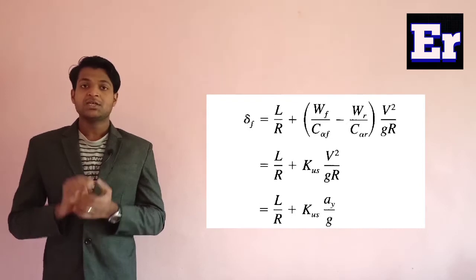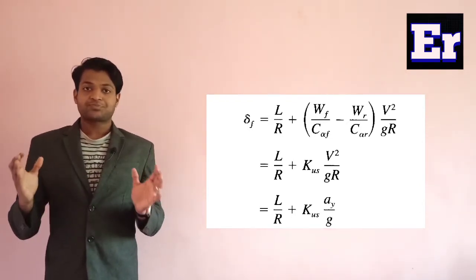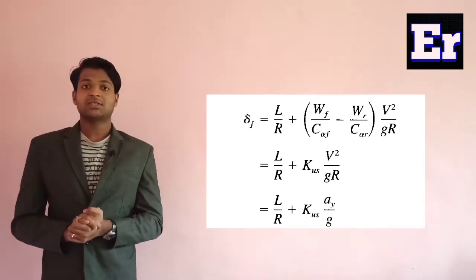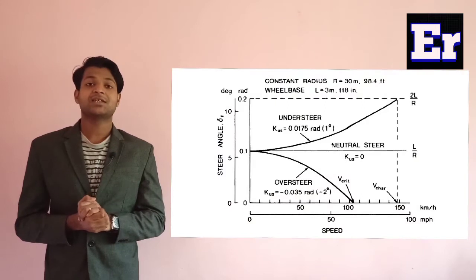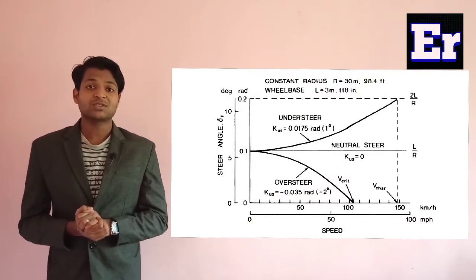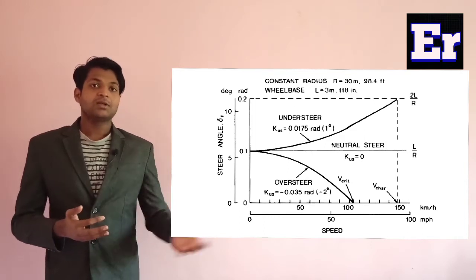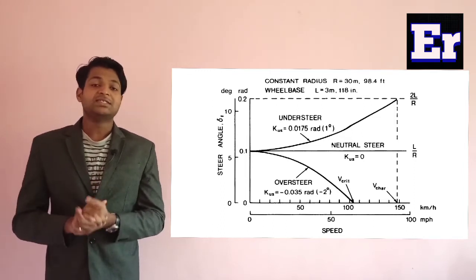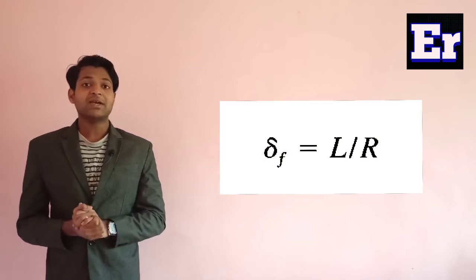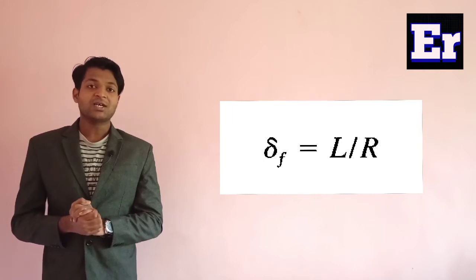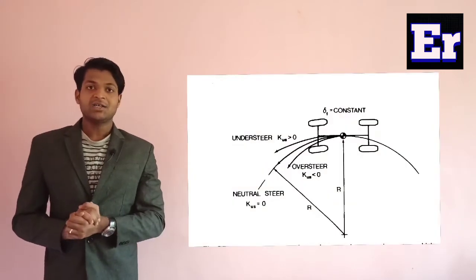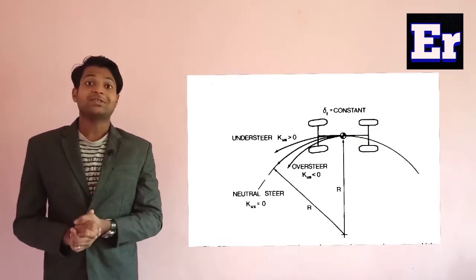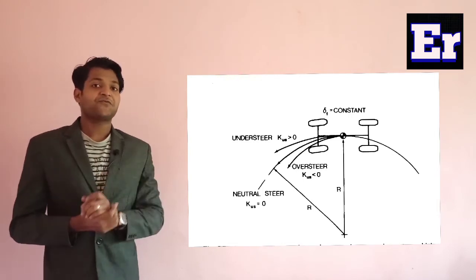By doing that, we arrive at an equation from which we can write the understeer coefficient K_us. The effect of understeer, oversteer, and neutral steer is directly proportional to this understeer coefficient. For the neutral steer case, K_us equals zero, so the additional term becomes zero and the steering angle equals L/R, where L is the wheelbase and R is the radius of curvature. The vehicle follows radius R — you only need to steer just enough, with no additional effect required, as shown in the graph.